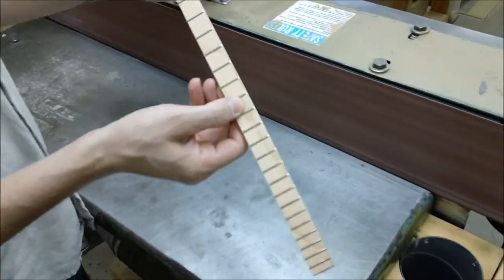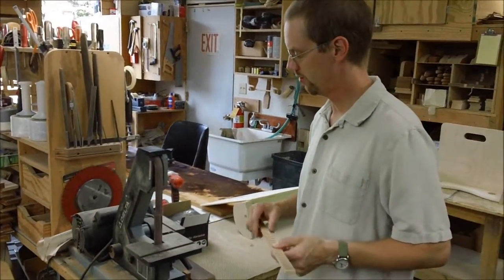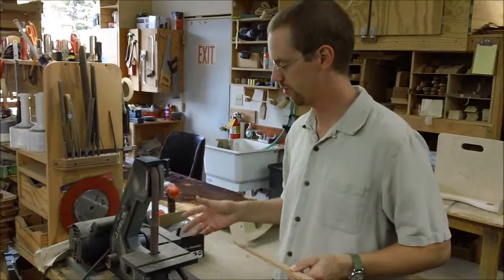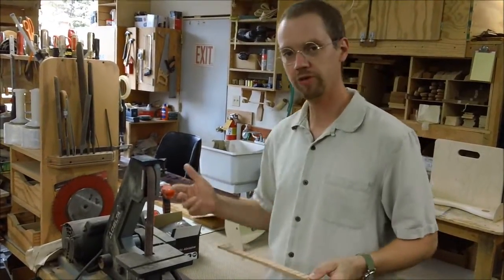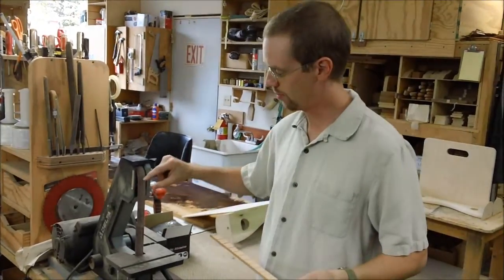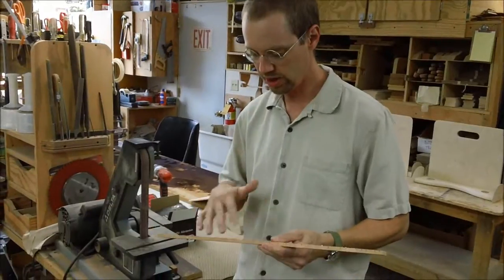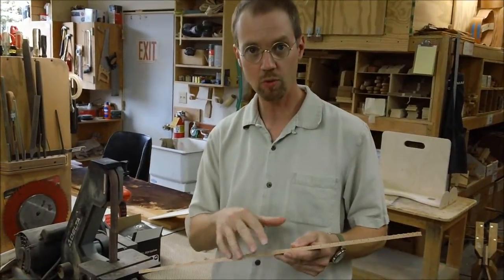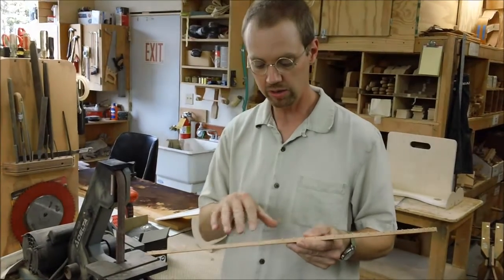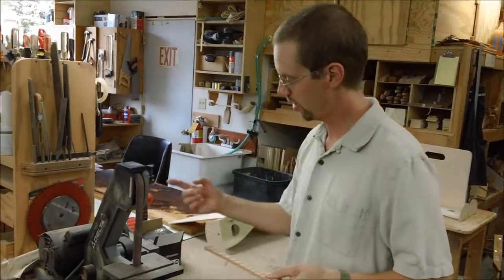This is another common type of belt sander you'll find in a home shop. Lots of folks have these, they're pretty inexpensive. Both of these belt sanders have belts that travel in only one direction. We want to avoid anything that's going back and forth because it'll tend to make these frets wobble around and get loose in the slot.